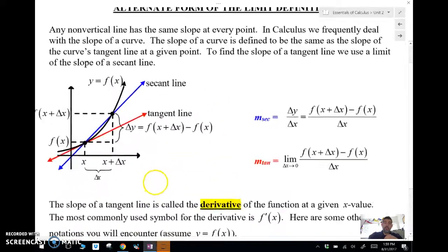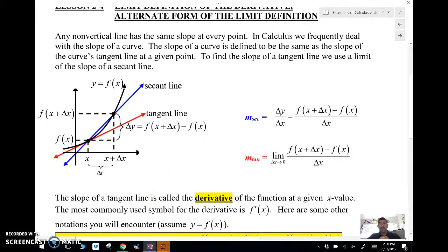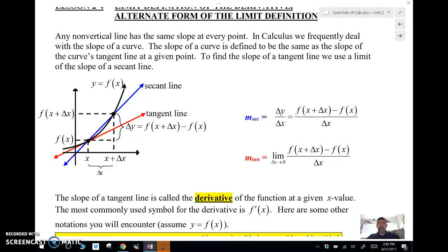So the first thing I want to do is just talk about what the definition of a derivative is. Now, oftentimes in calculus, we're looking for the slope of a curve. And the slope of a curve is defined to be the same as the slope of that curve's tangent line. Now, remember, the tangent line is the line that crosses the curve at just one point.